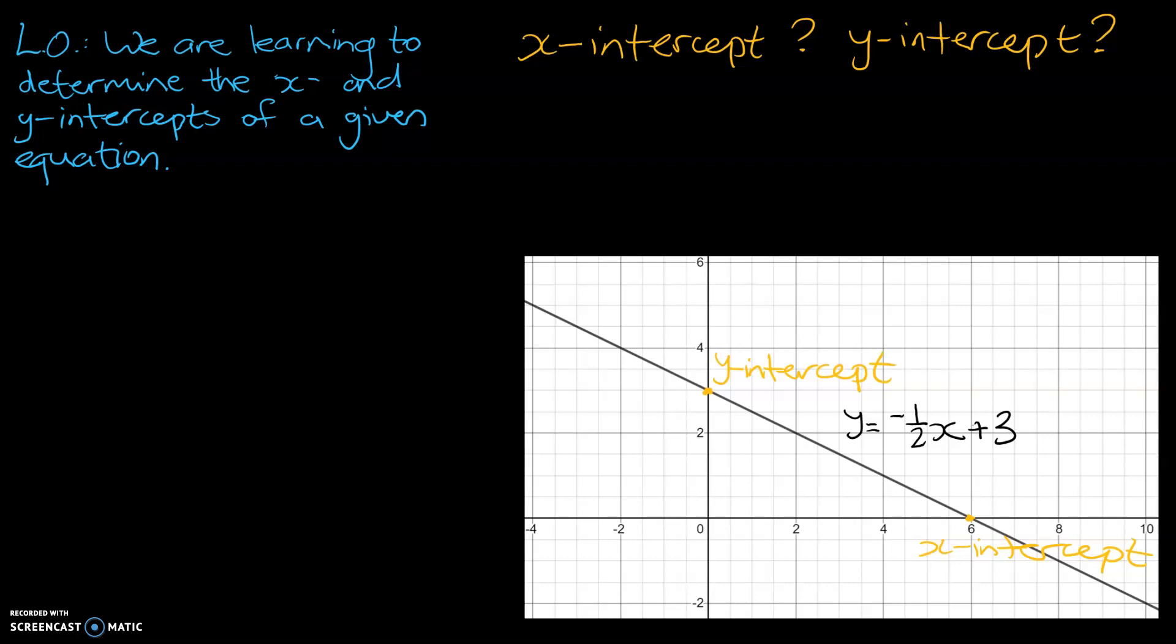And we can visually see these points, so we know for the x-intercept, the x-value is 6, and the y-value is 0. And we can also see, for the y-intercept, that the x-value is 0, and the y-value is 3.